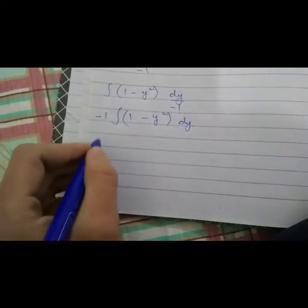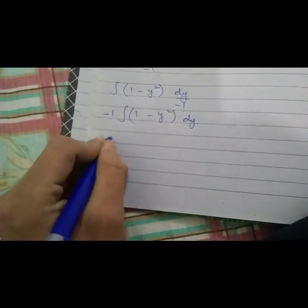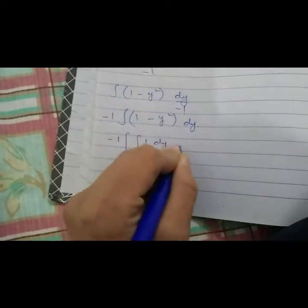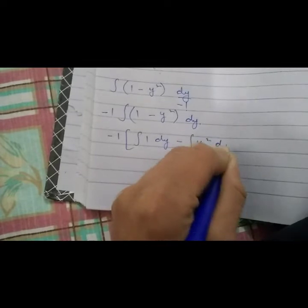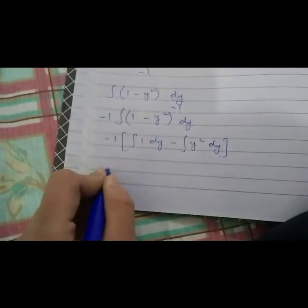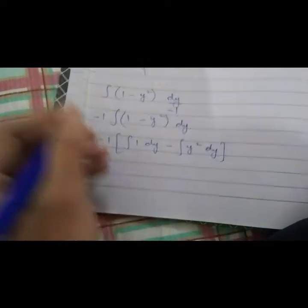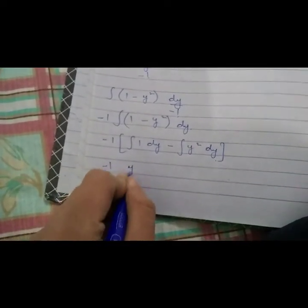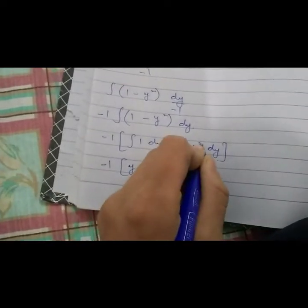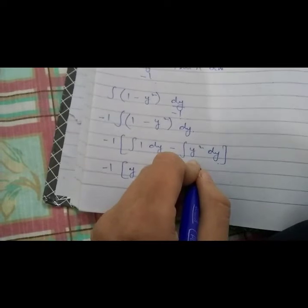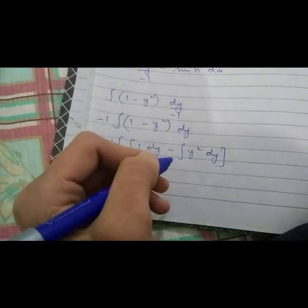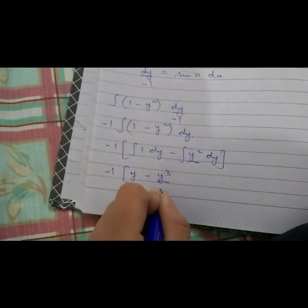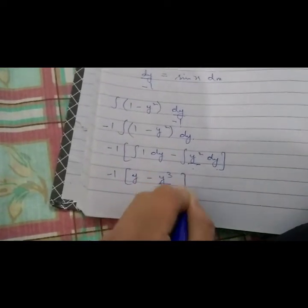Now we have to integrate separately: integrate 1 dy minus integrate y squared dy, then multiply by minus 1. The integral of 1 is y, and for y squared we add 1 to the power and divide by it. So it will be y cubed upon 3, plus c. Don't forget the plus c.